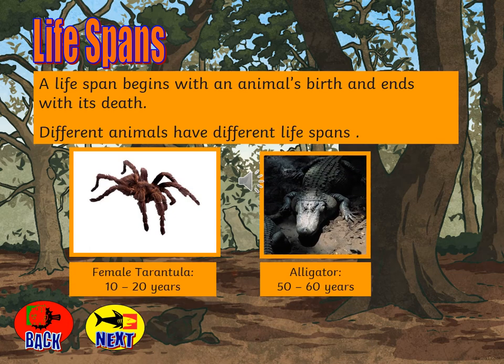You may have heard the word life span before. It's the amount of time that an animal tends to live for. It begins with an animal's birth and ends with its death. Different animals have different life spans. Those of you that know me will understand why this is so terrifying — female tarantulas live for 10 to 20 years, and alligators can live up to 60 years.